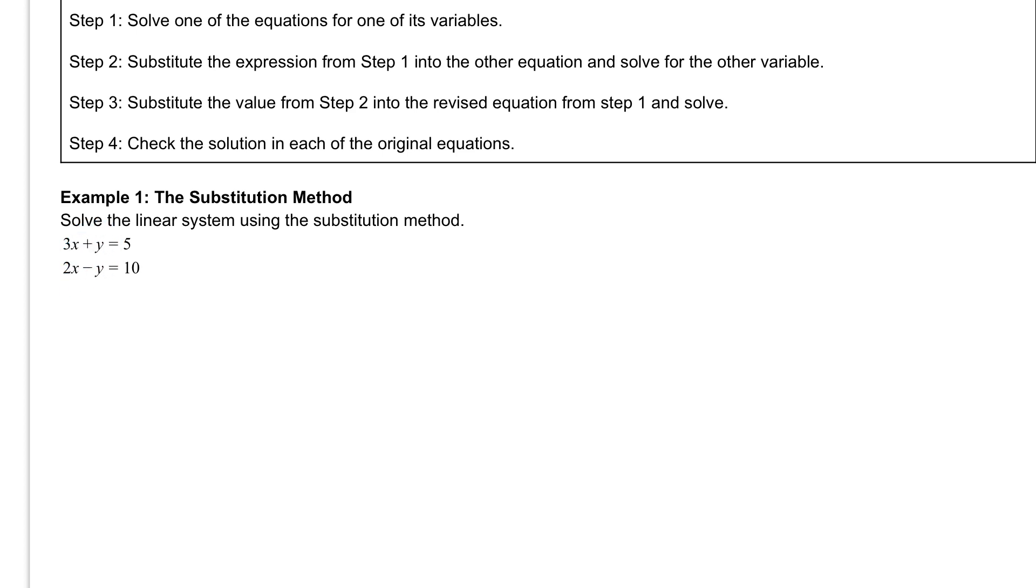So in step one, we are going to solve for the y in the very first equation. So let's label this step one. We're going to take 3x plus y equals 5 and we are solving for y. The only thing we have to do to solve for y is subtract the 3x from both sides. And we get y is equal to 5 minus 3x. And that's our very first step.